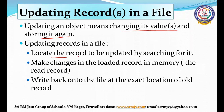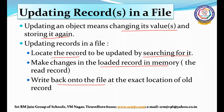To update a record, first locate the record to be updated by searching for it. Then make changes in the loaded record in memory. After that, write it back onto the file at the exact location of the old record. So how are we going to find that exact location?